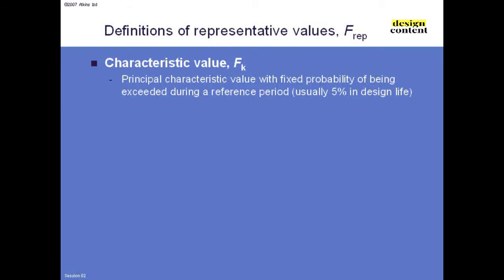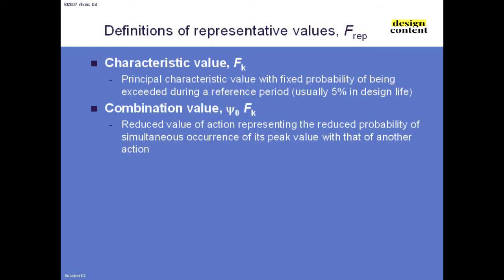The representative value can take different forms. If the action is the leading action — say traffic produces the biggest bending moment — you take its full characteristic value. For accompanying actions like wind, you multiply the characteristic value by a reduction factor psi_0, called the combination factor, because wind won't reach its full 5% fractile at the same time as traffic on a probabilistic basis. Psi_0 values are given in Eurocode 0 and the national annex.